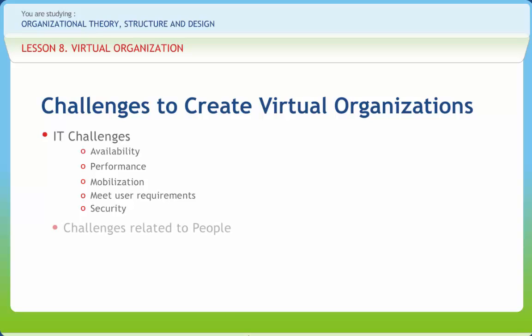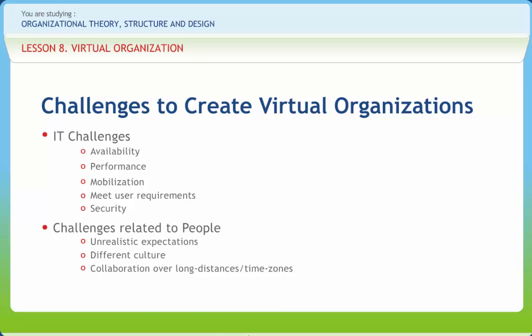The people challenges relate to the interaction between members of the virtual organization. They are easier to solve in the centralized model since the core organization holds power and dictates objectives and solutions — members that do not conform will not be chosen. People challenges include unrealistic expectations, different cultures, collaboration over long distances or time zones, diverse processes or procedures, and management practices.